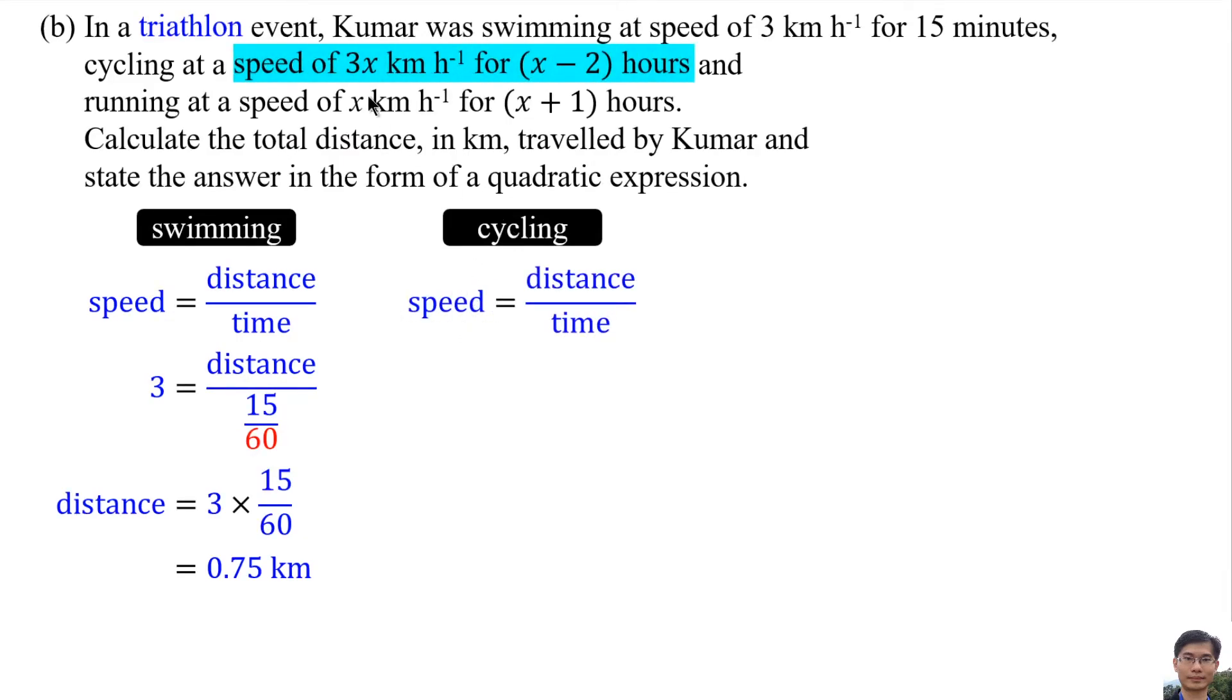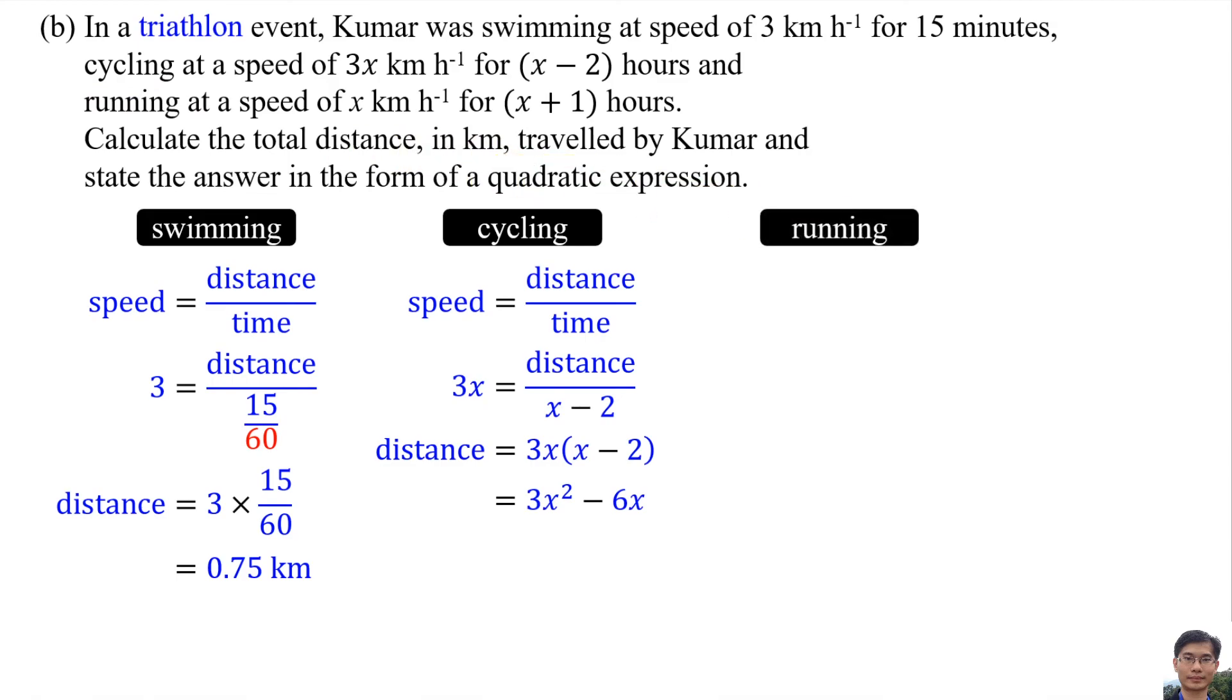The speed for cycling is 3x and the time is x minus 2. So the distance for cycling is 3x squared minus 6x. The speed of running is x and the time is x plus 1 hours. So the running distance is x squared plus x.